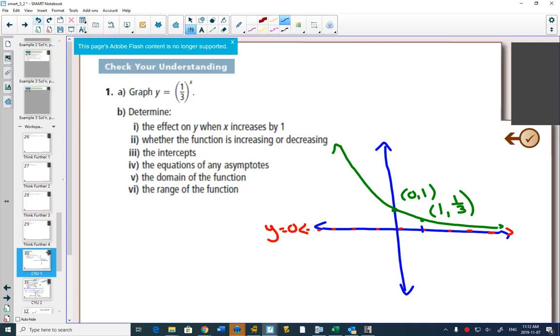Once we've got that, what happens on y when x increases by 1? So every time you go 1 to the right, if I increase 1 here, I'm going to have 2, 1 ninth. y gets multiplied by 1 third. You can see it in the graph if you look at the y values.